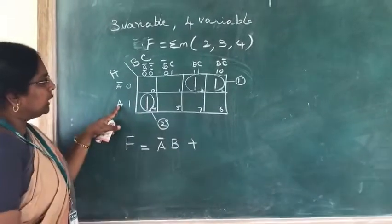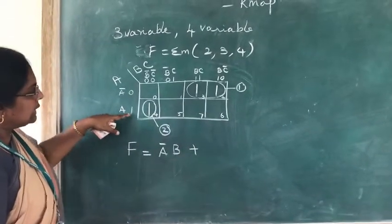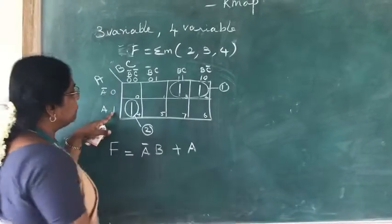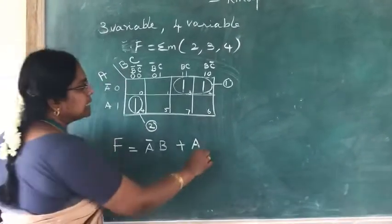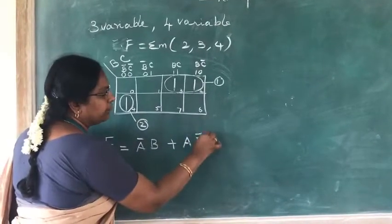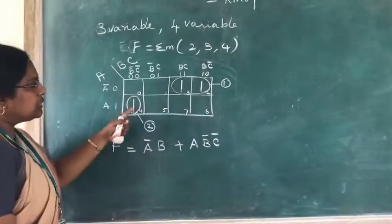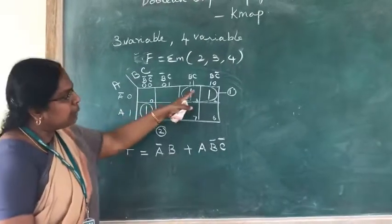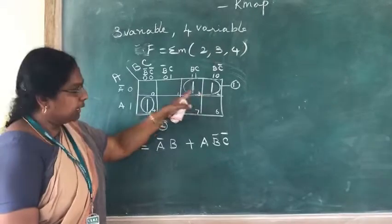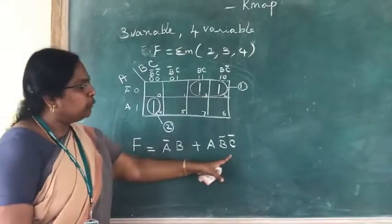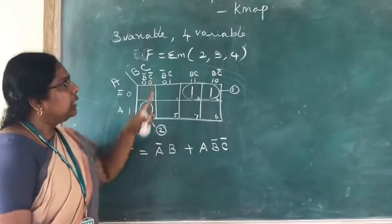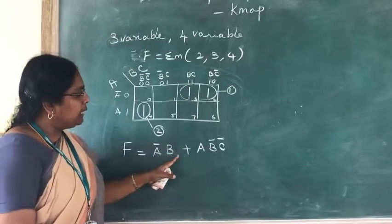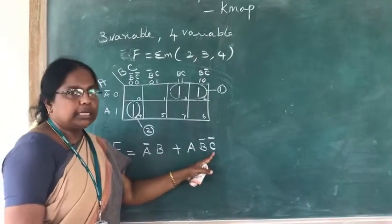For group 2, the isolated cell 4, since it is in the row where A = 1, we get A. The column gives B complement and C complement, and since no variable is eliminated for an isolated 1, the product term is A · B complement · C complement. So the simplified Boolean expression is F = A'B + AB'C'.